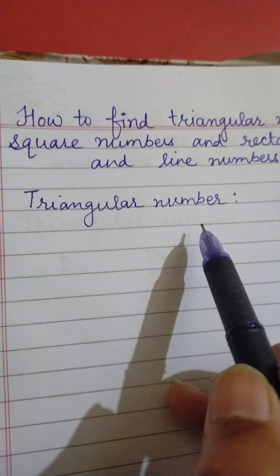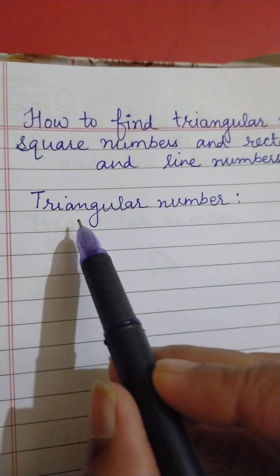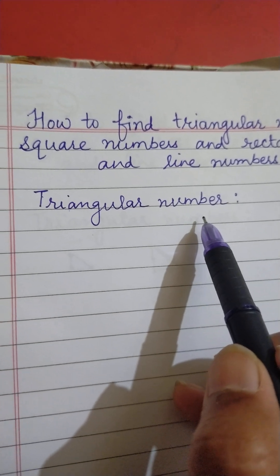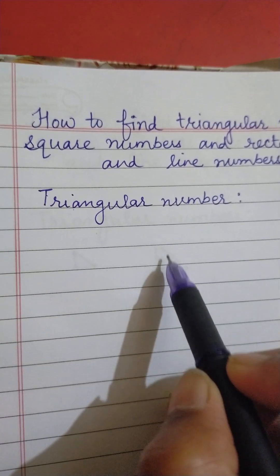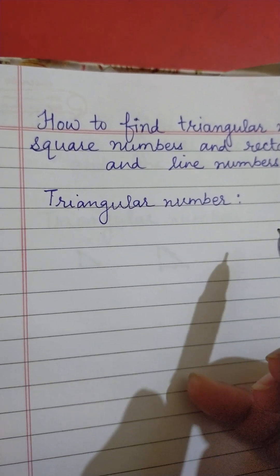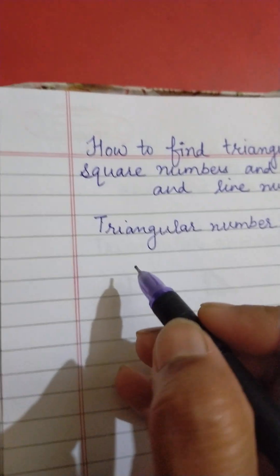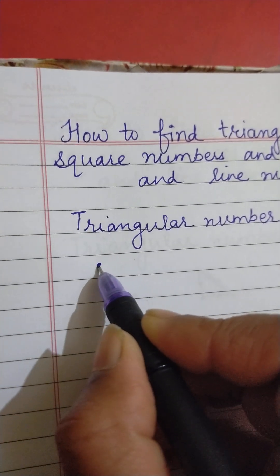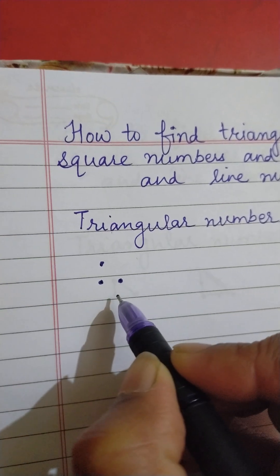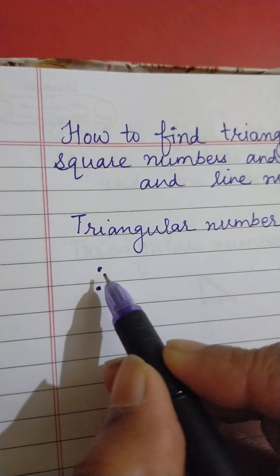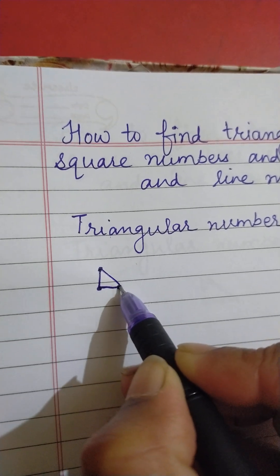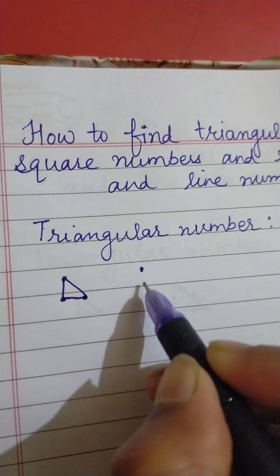Firstly I am going to explain triangular numbers. As it is clear from the name, triangular numbers are when we arrange the number in the form of dots and the number makes the shape of a triangle. For example, three dots form a triangle, so three is a triangular number.